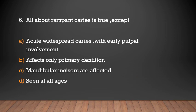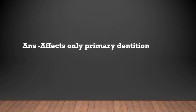All of the following about rampant caries is true except: acute widespread caries with early pulpal involvement; affects primarily primary dentition; mandibular incisors are affected; seen at all ages. Answer: Affects only primary dentition — this is false. Rampant caries affects both primary and permanent dentition.